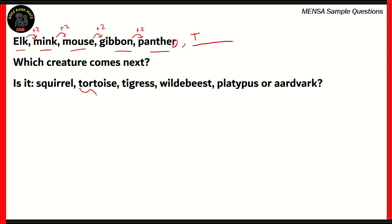There are two options that begin with T: tortoise and tigress. We know that aardvark, platypus, wildebeest, and squirrel are all incorrect. However, how do you choose between tortoise and tigress? If you look at the list again, you see another factor: elk has three letters, mink has four letters, mouse has five letters, gibbon has six letters, and panther has seven letters.